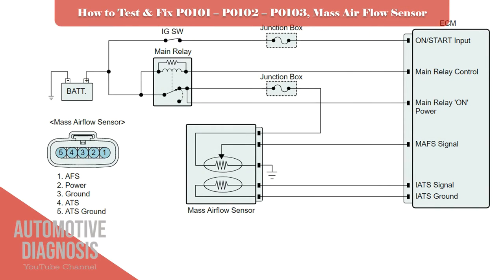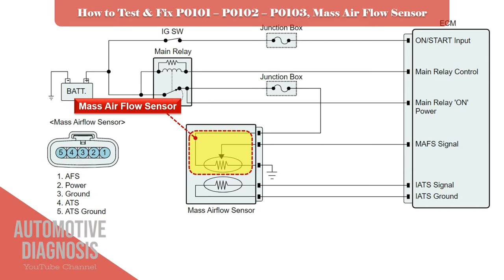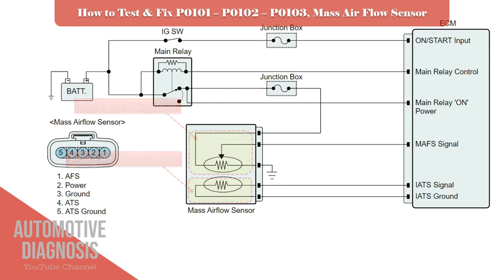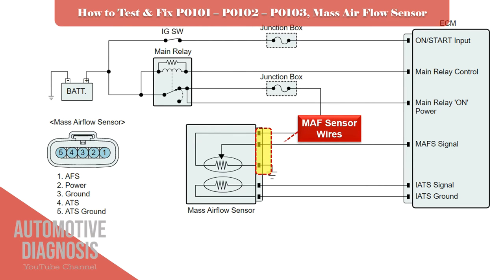Inside the Mass Airflow Sensor there are actually two sensors: the Mass Airflow Sensor and the Intake Air Temperature Sensor. Because most of the time there are five wires on this sensor's harness, three wires are for the MAF Sensor and the other two are for the Air Intake Temperature Sensor.